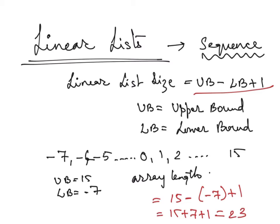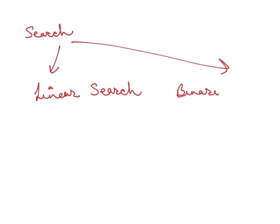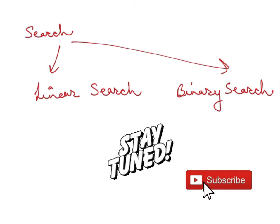Now in the linear list we will be learning about two kinds of searching. These kinds of search algorithms are the linear search and the binary search. So we will be discussing about both the searches in the next video. Till then stay tuned and I will be uploading the video very soon. Thank you so much.